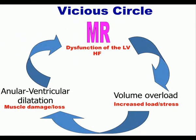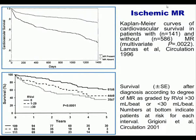Mitral regurgitation produces a vicious circle: the regurgitation creates volume overload, which produces annular and ventricular dilatation, which worsens the mitral regurgitation. Regarding the ventricle, the increased load and stress damages the ventricle, producing left ventricular dysfunction and heart failure — also a vicious circle. This explains why mitral regurgitation has such a bad impact on patient prognosis.